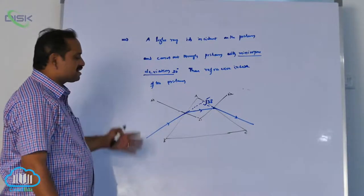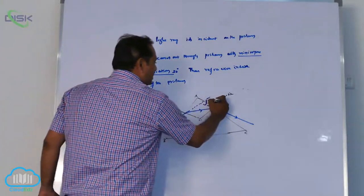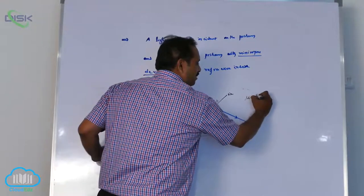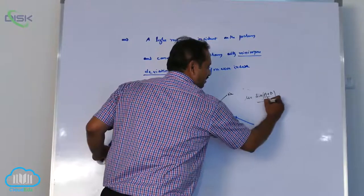So that ain't good I think so. Now it is easy to understand the thing - minimum deviation capital D. Now we can apply the condition for refractive index: mu equal to sine of (A + D)/2 by sine A/2.